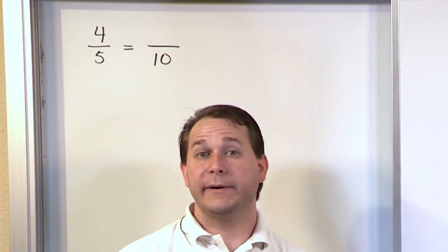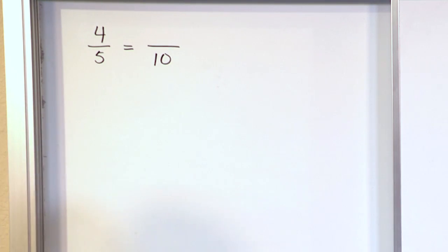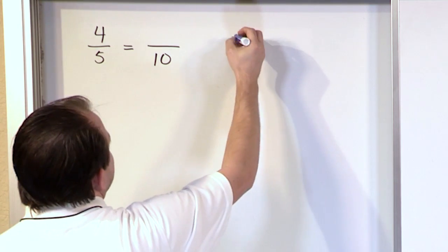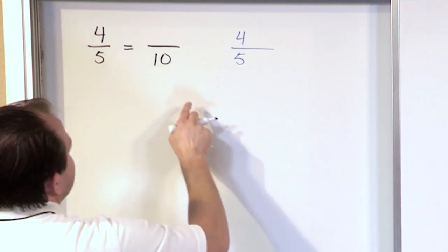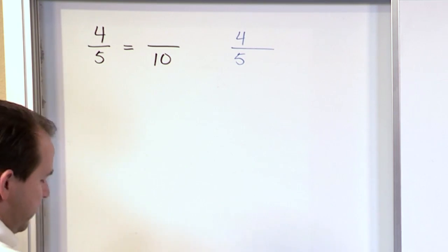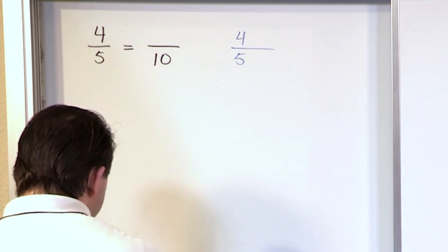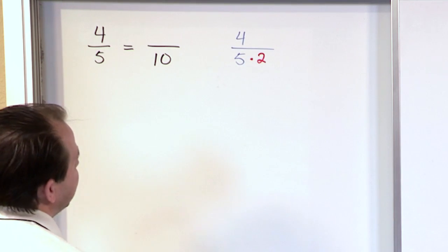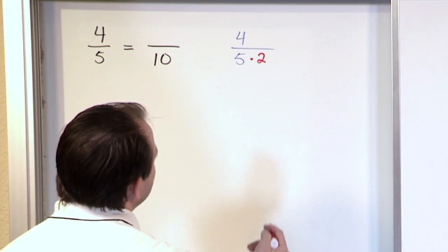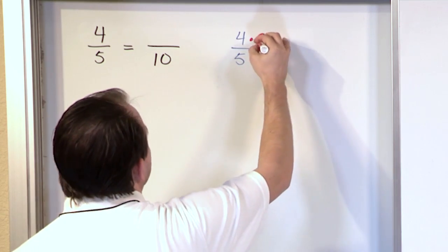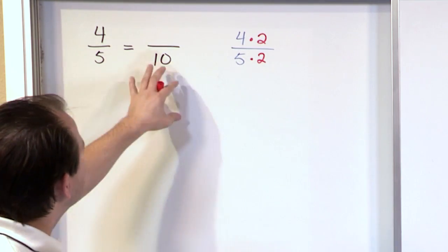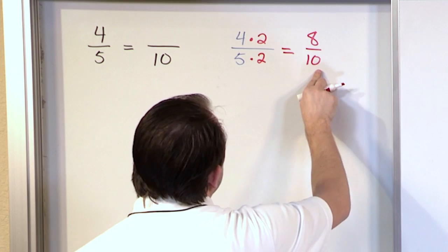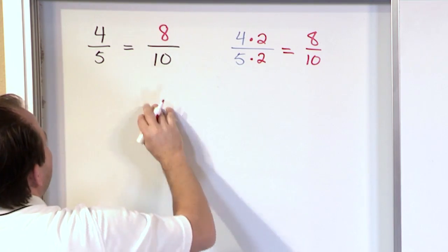Remember, you can multiply a fraction by anything you want as long as you do it to the top and the bottom. So if you think about it, you have 4 fifths here. We know that we're trying to get to a bottom number of 10. What would we have to multiply by to give me 10 on the bottom? Well, I have a 5 here, so I would need to multiply by 2 to give me 10. But if I multiply by 2 on the bottom, then I must also do it to the top — that's the only way to keep these fractions equal. So the top would become 8 and the bottom would become 10, giving us 8 tenths.